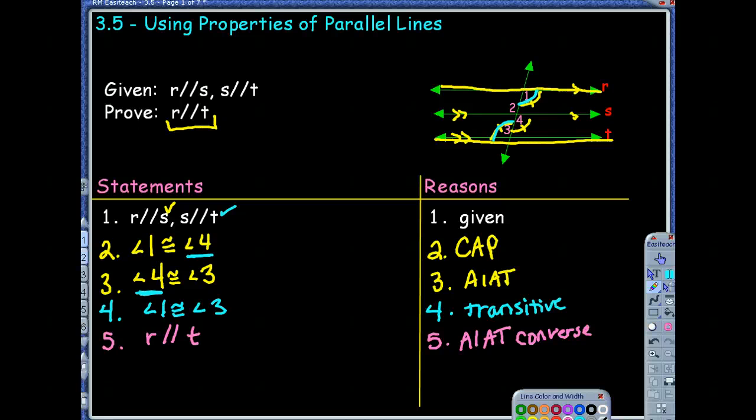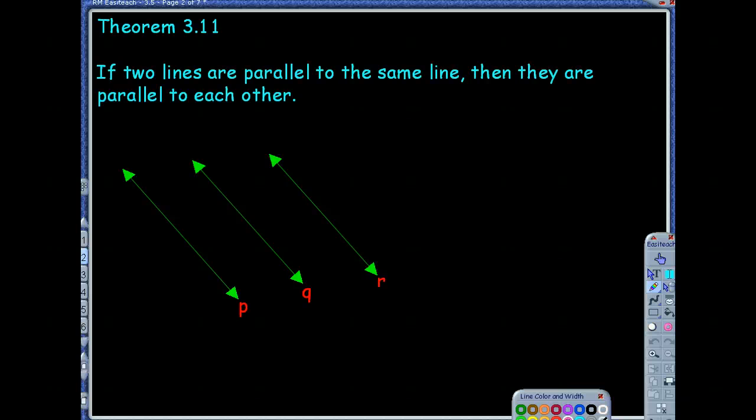So Theorem 3.11 — notice there's no name to this theorem. So what does that mean? If I ever decide to use this in a proof or explain myself, I have to explain what the theorem says.